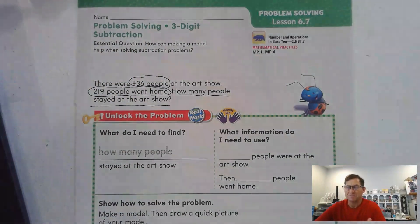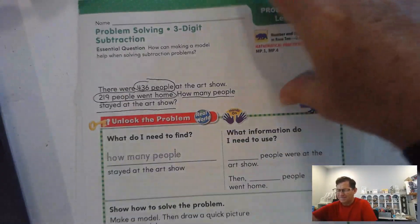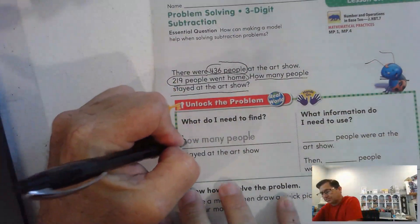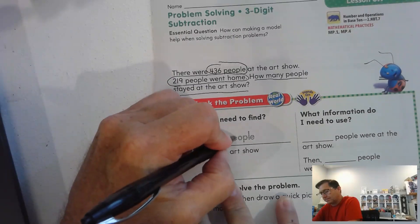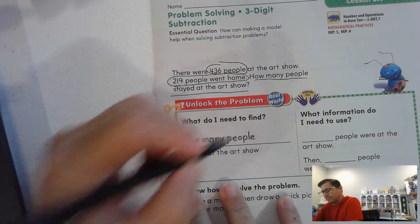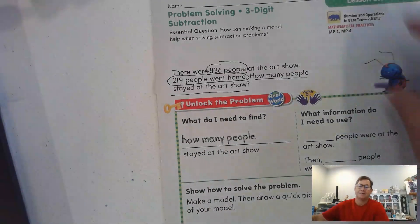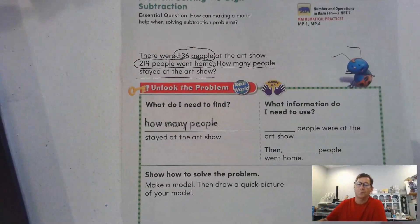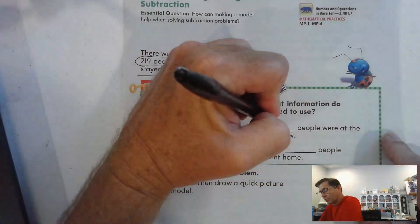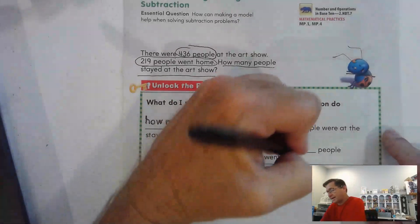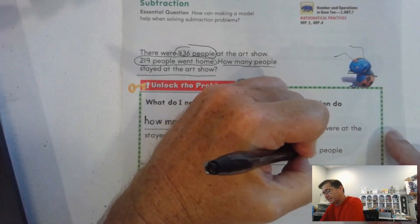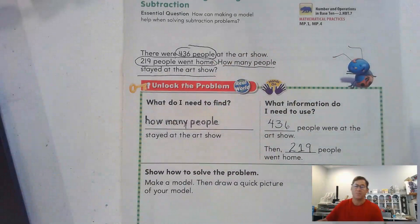The fact that people went home indicates that we have to subtract. So what do I need to find? I need to find how many people stayed at the art show. What information do I need to know? I need to know that there were 436 people at the art show and that 219 people went home.